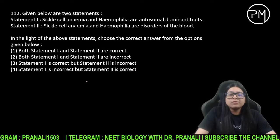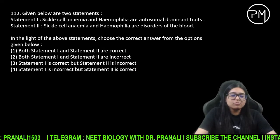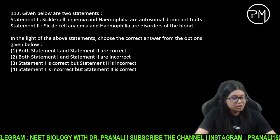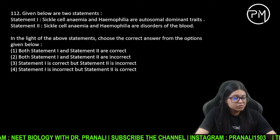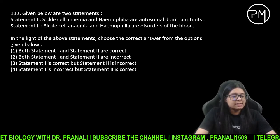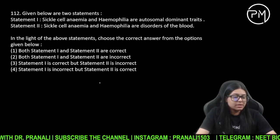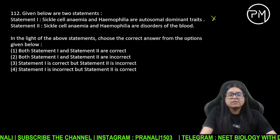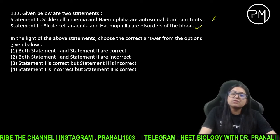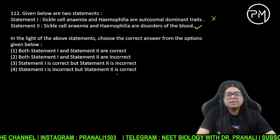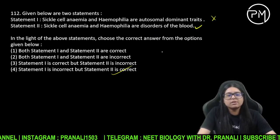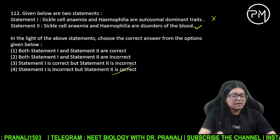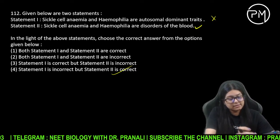Sickle cell anemia, hemophilia — autosomal dominant kya? Yeh toh galat ho gaya — autosomal dominant nahi, autosomal recessive. Dono autosomal dominant nahi hain. Phir hemophilia are the disorders of blood — blood ke zariye disorder hai, toh A wala incorrect hai par statement 2 wala correct hai.